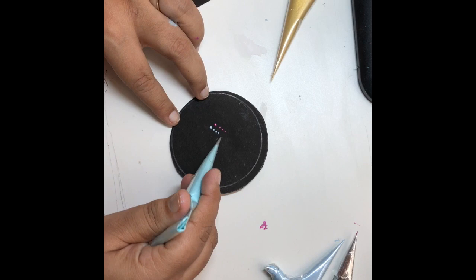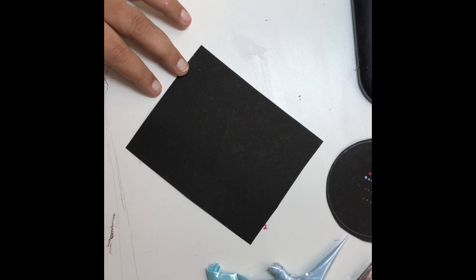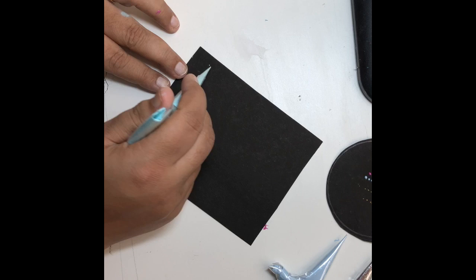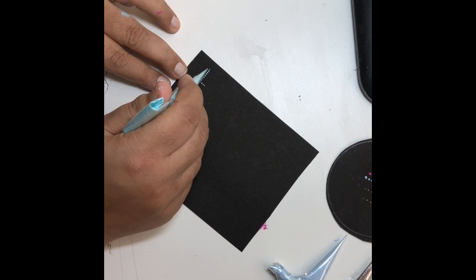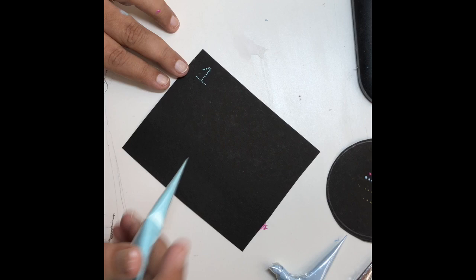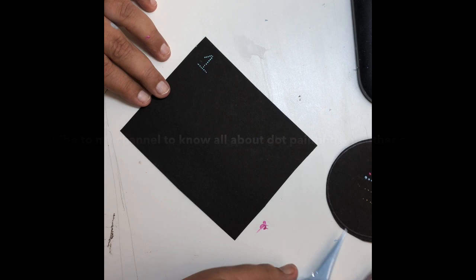Now I will tell you how to use these cones for making different kinds of dots. Number one is very small dots. Mostly we use this kind of small dots to paint around the very big dots in the middle of the mandala. When we make a big dot, we usually go around and make very small dots. For this kind of dots, this cone is perfect. You just have to touch the surface very lightly to make these kinds of dots.